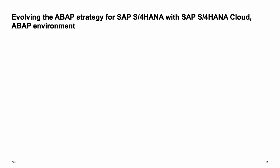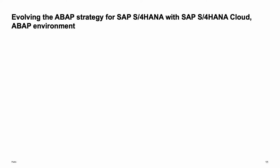According to the success of Steampunk in the last couple of years, we are evolving the ABAP strategy for S/4HANA Cloud with so-called embedded Steampunk. Steampunk consists of two pillars: the product offering itself, plus the feature set — which includes the ABAP development tools, the ABAP language version with released objects, and the ABAP programming model.